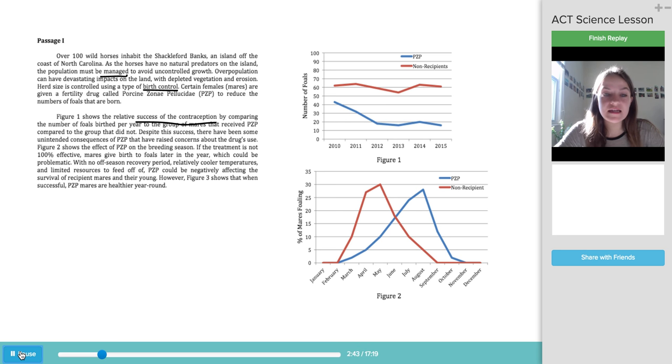Despite the success, there have been some unintended consequences of PZP that have raised concerns about the drug's use. Figure two shows the effect of PZP on the breeding season. So if the treatment is not 100% effective, mares give birth to foals later in the year. That's good to know. Which could be problematic. With no off-season recovery period, relatively cooler temperatures, and limited resources to feed off of, PZP could be negatively affecting the survival of recipient mares and their young. However, figure three shows that when successful, PZP mares are healthier year-round. So there was not too much text. You can skim read it briefly and get a sense for what the topic is about. Here, we're introduced to a couple of terms we might not have known before. Mares being female horses and PZP being the drug used as a birth control.